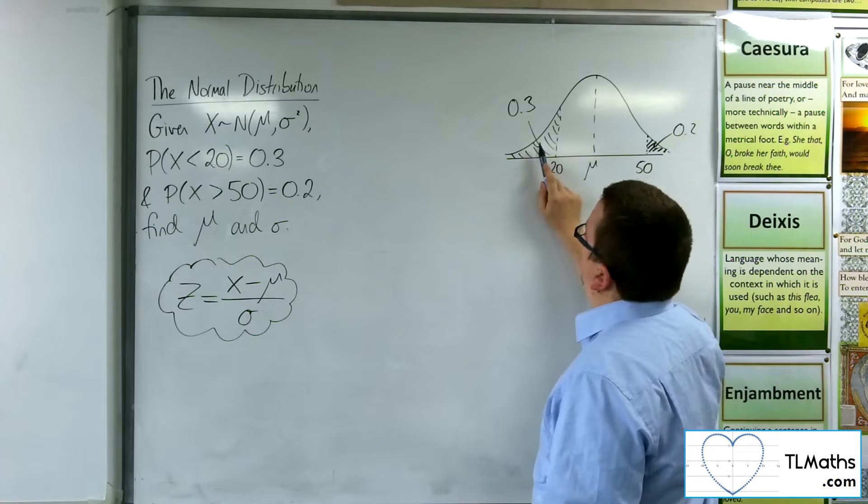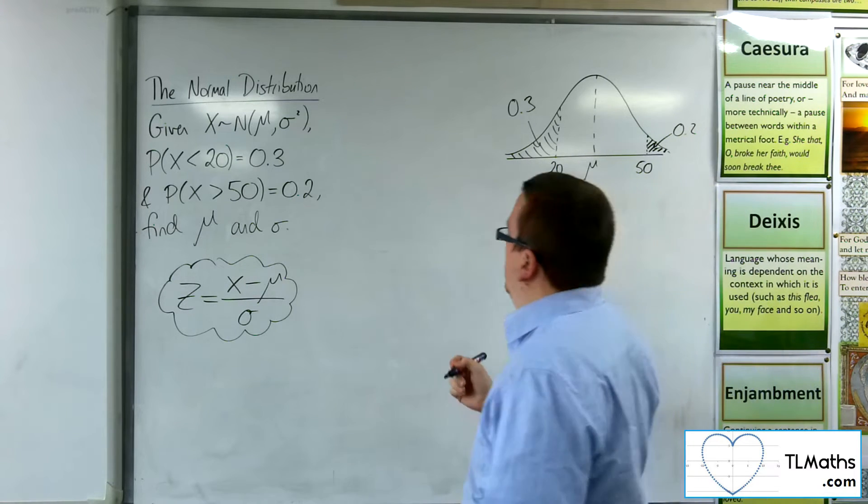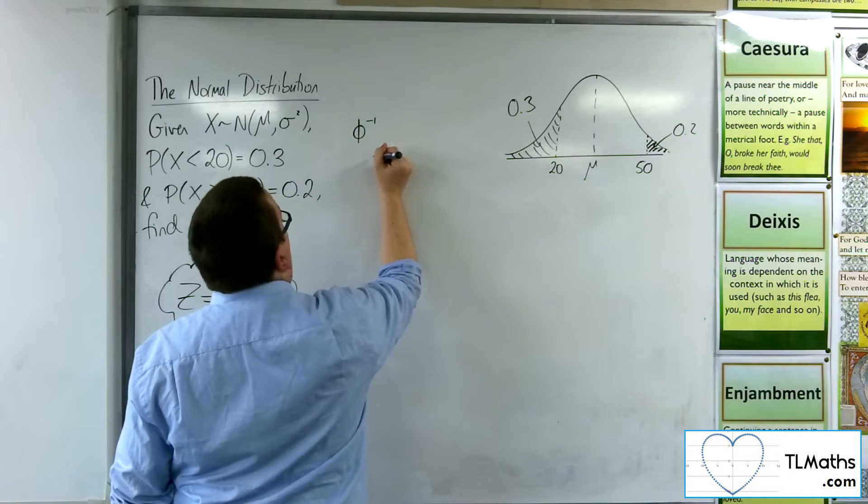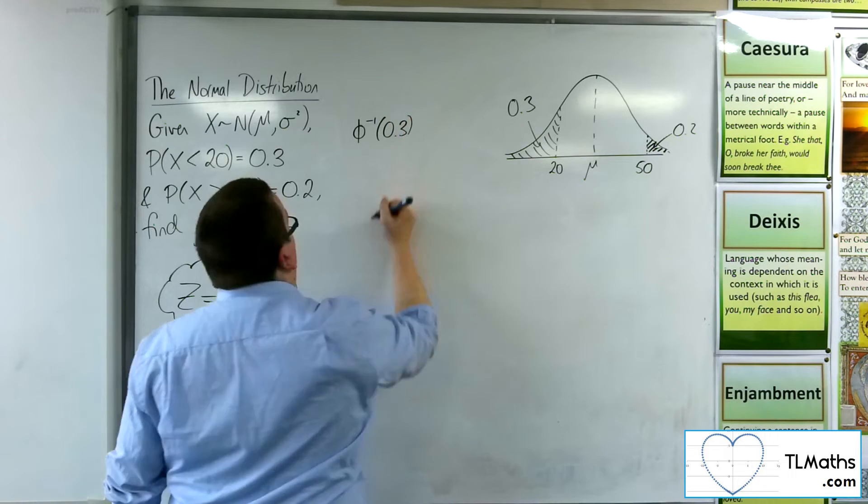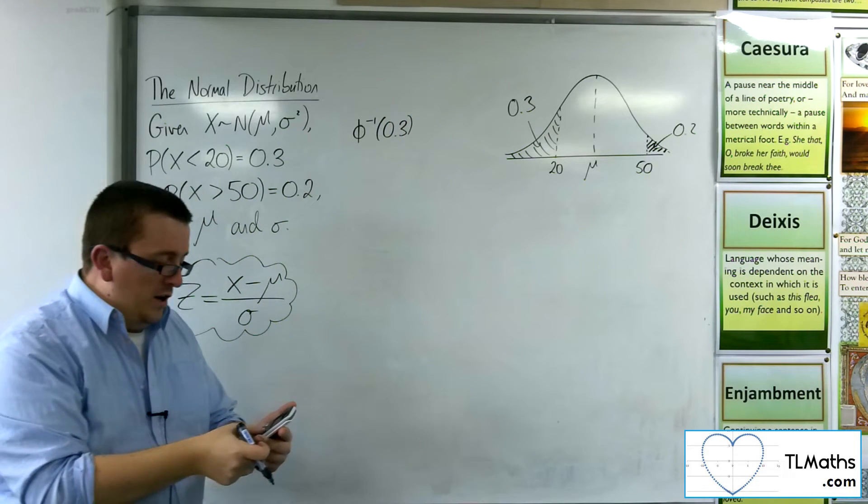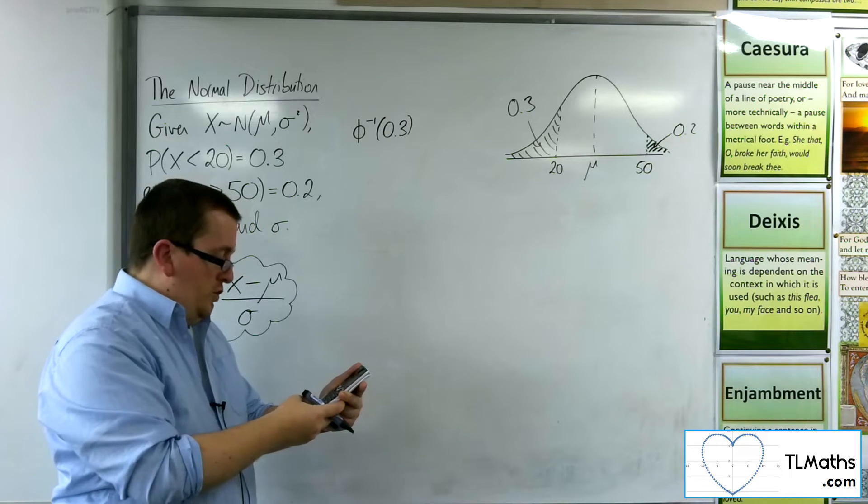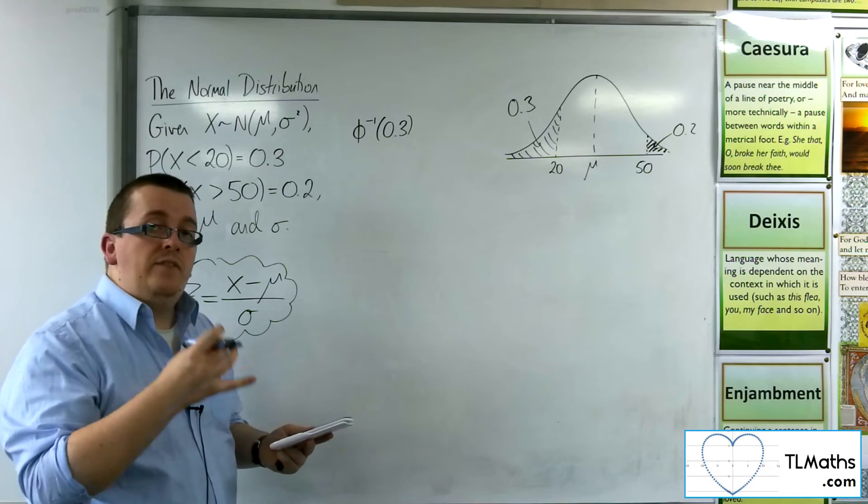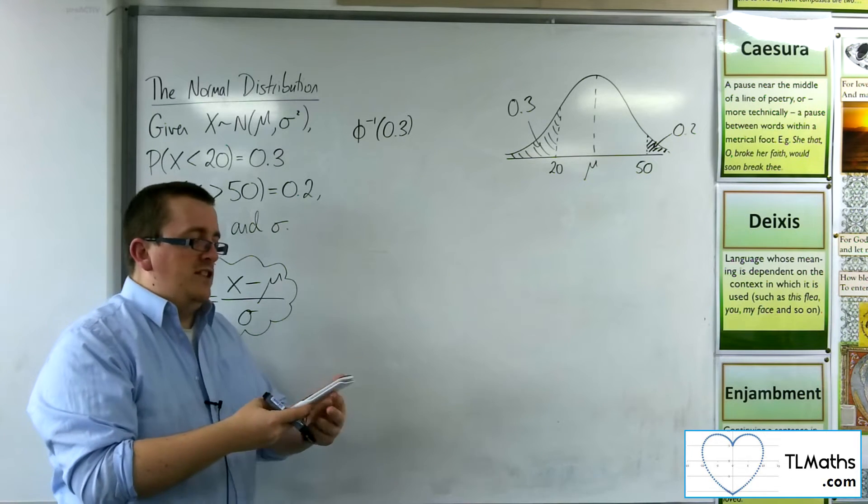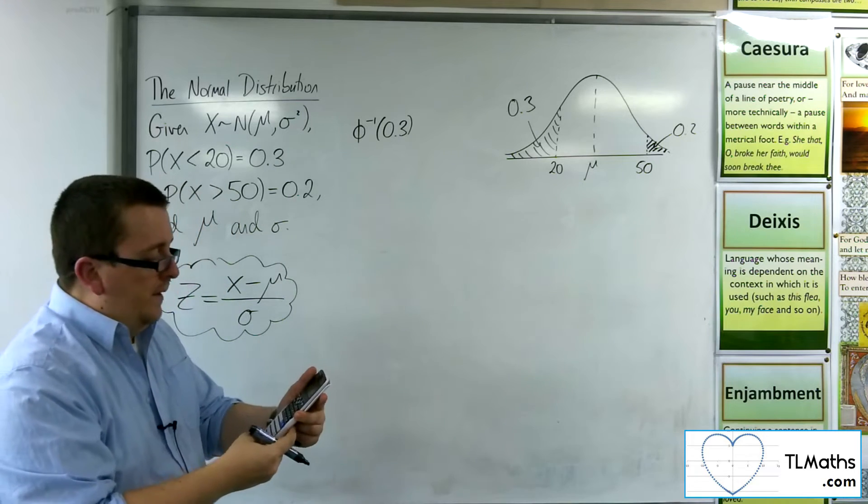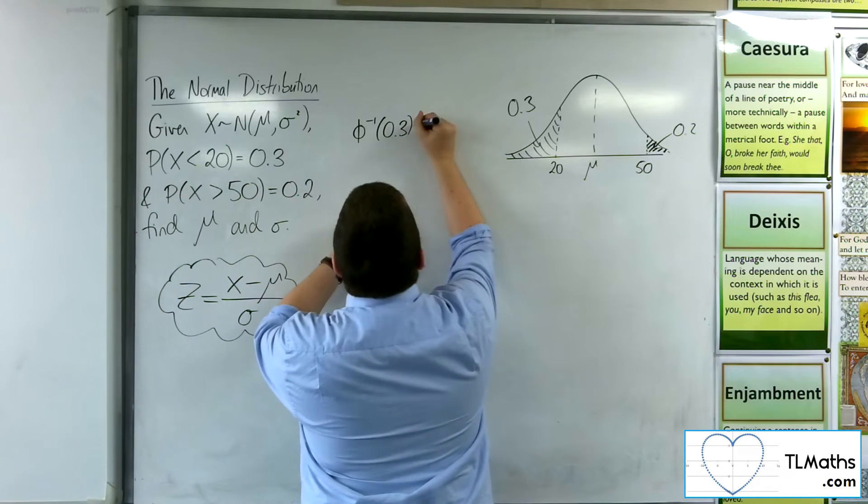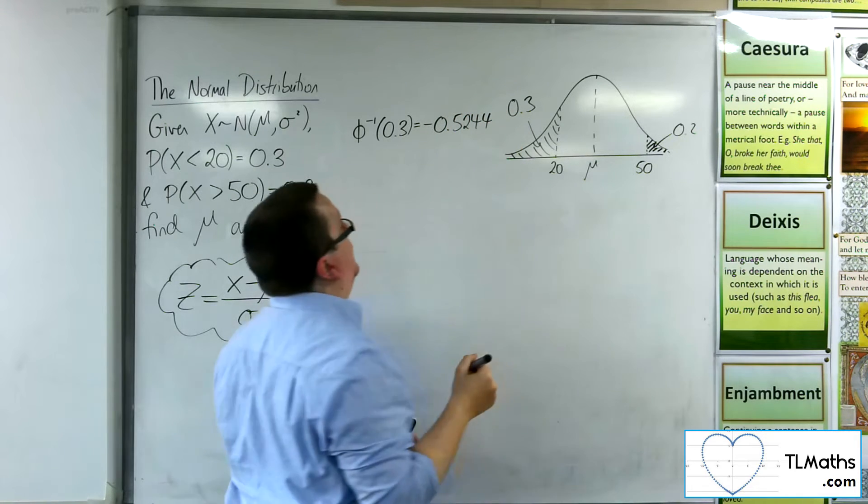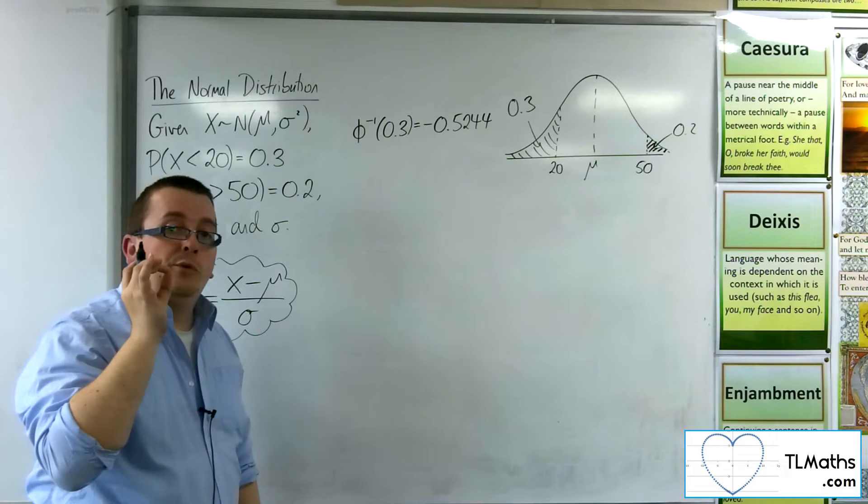So let's have a look at this first bit. 30% is less than 20. So what I can do is I can look up the inverse norm of 0.3. So on my calculator, I'm going to go to menu number 7 and then inverse normal, number 3. The area is 0.3. The standard deviation needs to be 1 and the mean needs to be 0. I'm looking at the standard normal here. And I get minus 0.5244. I'll round it to 4 decimal places. That is your z value.